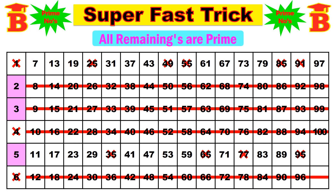That's all — all the remaining numbers are prime numbers. The prime numbers from 1 to 100 are: 2, 3, 5, 7, 11, 13, 17, 19, 23, 29, 31, 37, 41, 43, 47, 53, 59, 61, 67, 71, 73, 79, 83, 89, and 97.